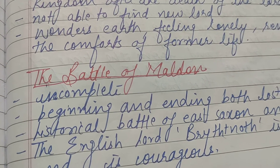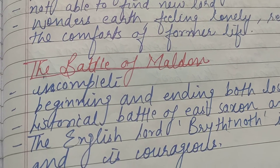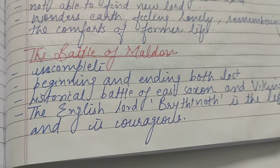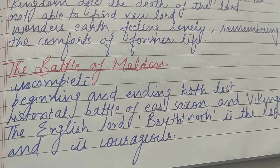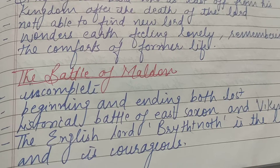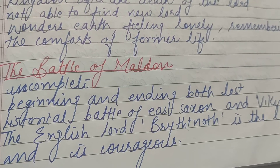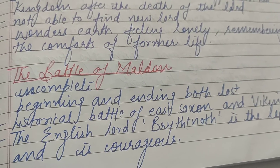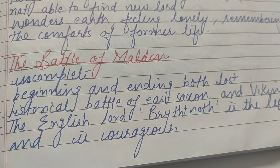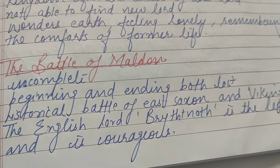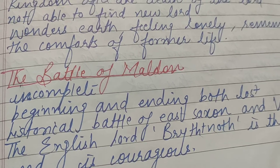The Battle of Maldon — it is incomplete, beginning aur ending dono lost ho chuki hain. Ismein historical battle dikhaya jaata hai East Saxons aur Vikings ka. Jaise humne historical background mein King Alfred aur Vikings ke beech battle ke baare mein discuss kiya, aise hi Battle of Maldon mein bhi historical battle dikhaya jaata hai East Saxons aur Vikings ka. Us samay English lord Byrhtnoth the, aur inmein English lord Byrhtnoth ki bahut zyada tareef ki gayi hai ki unhone kaise courageously Vikings ko Britain se door bhaga diya.